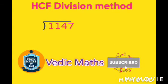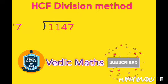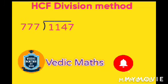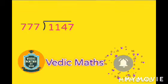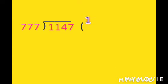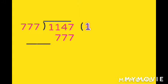Subscribe to our Vedic Max channel and don't forget to press the bell icon. Now, put the biggest number inside the two lines — put 1147 inside the two lines and put 777 outside the line.